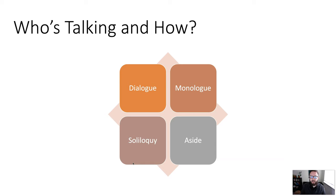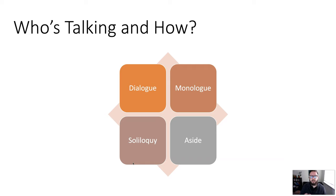Speaking of speaking — who is talking and how? There are primarily four different types of speech when reading a play. The first is dialogue: general conversation between characters on stage, involving at least two characters talking to each other.